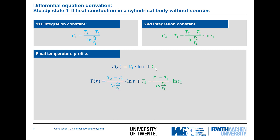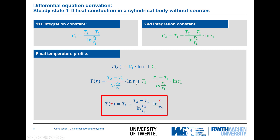Placing C1 and C2 into T(r) = C1·ln(r) + C2 and rearranging, the prefactor appears in both terms, and we combine ln(r) − ln(r1) = ln(r/r1). The final temperature profile is: T(r) = T1 + (T2 − T1) / ln(r2/r1) · ln(r/r1). This concave shape is expressed mathematically by the logarithm, and this is the final equation for temperature as a function of radius.